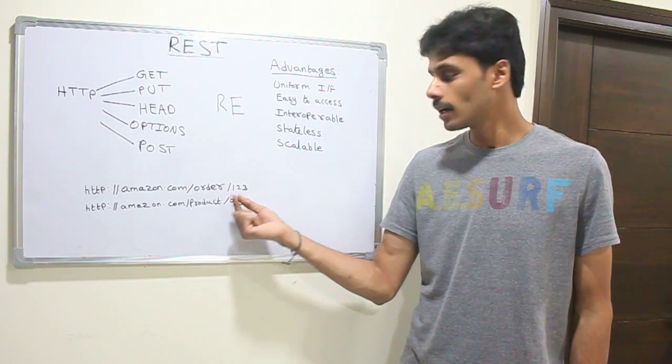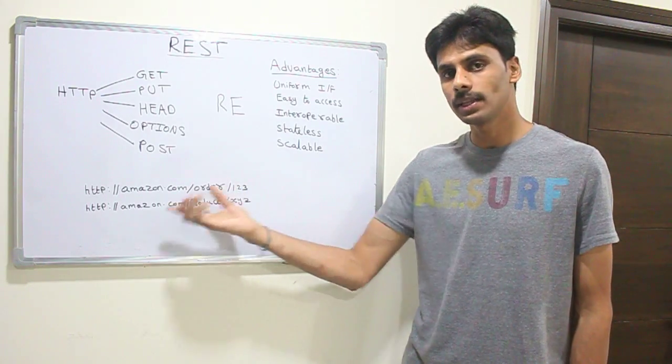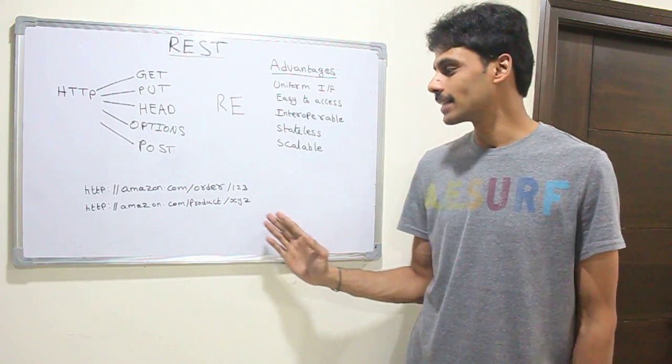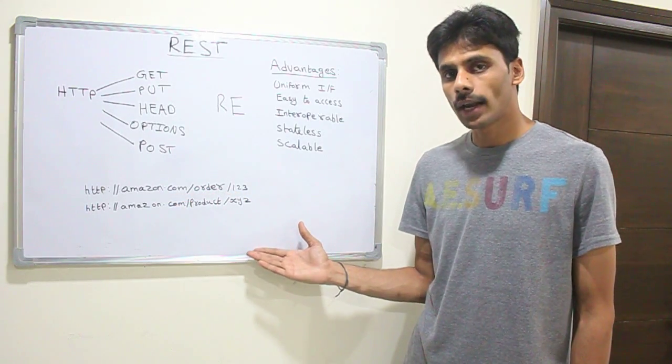Amazon.com slash order, and this is the order ID. Simply this URL, when we hit, this is just an example. You can't really try this out, but this is how a RESTful service might look like.